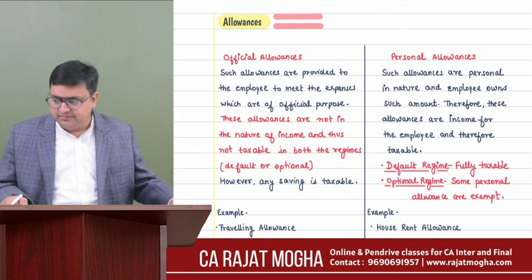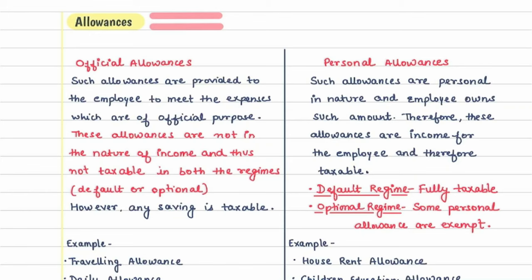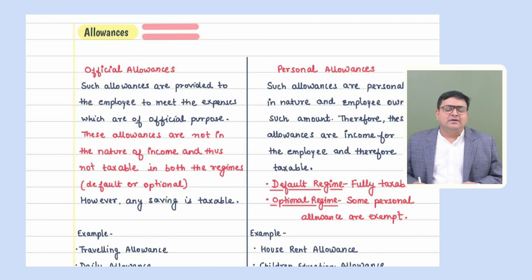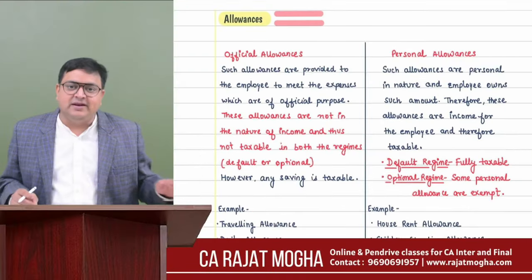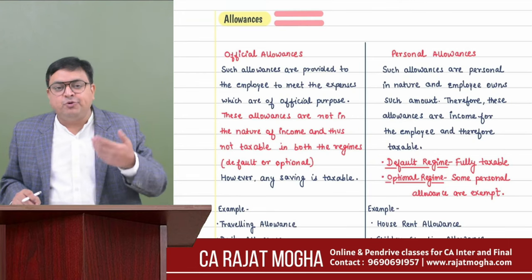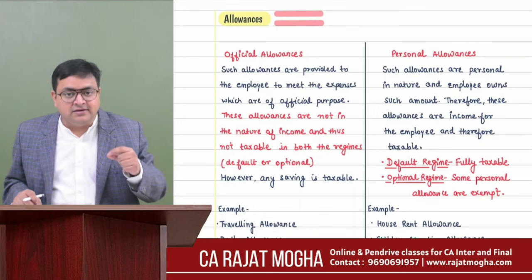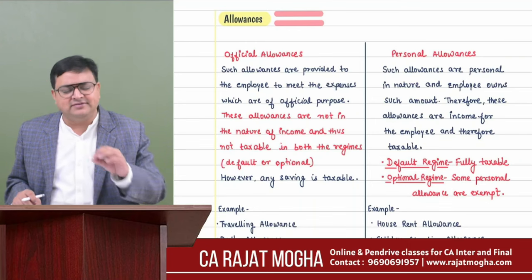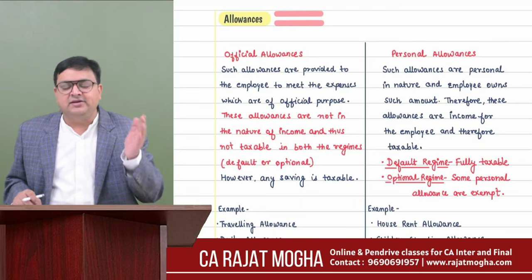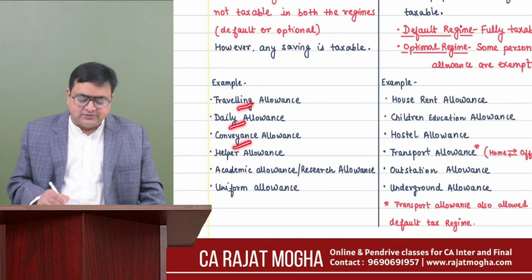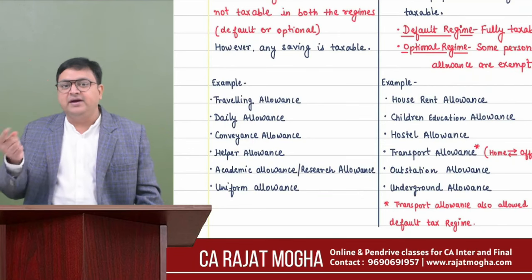Let's come to allowances. There are two types: official allowances and personal allowances. Official allowances are something from which the employee derives no benefit — they are provided so the employee can meet official duty expenses. If there is any saving from official allowances, that saving becomes taxable. Otherwise, official allowances are fully exempt under both the default and optional tax regimes. Examples include traveling allowance, daily allowance, and conveyance allowance.